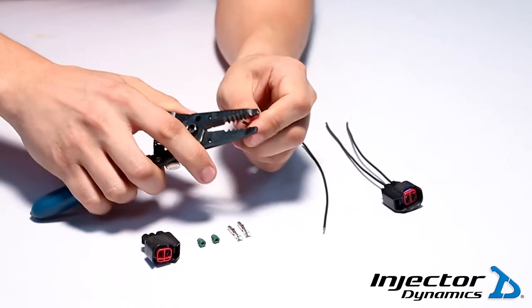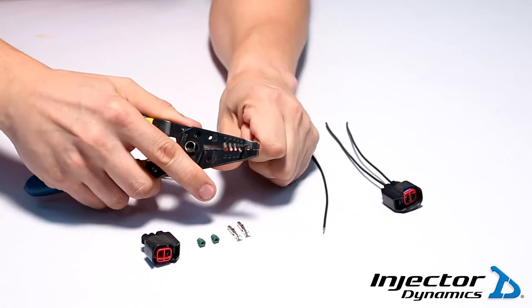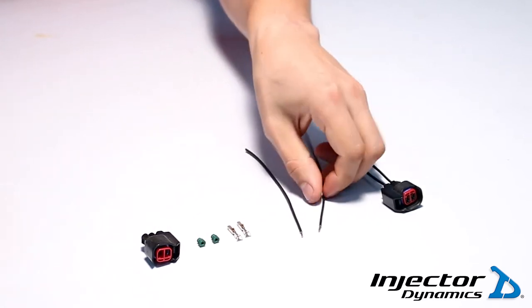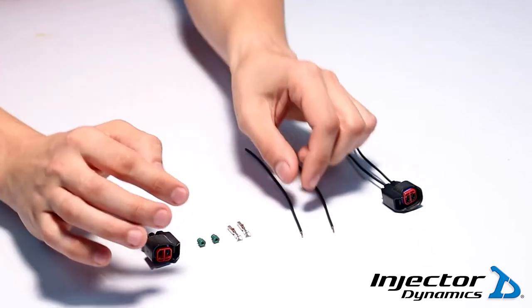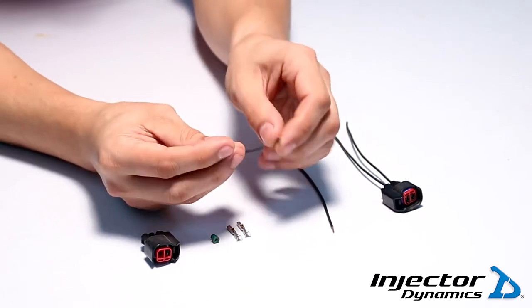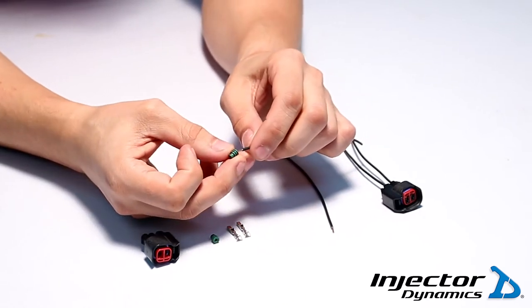Next, we're going to take both of the green seals and place them with the narrow end of the seal at the end of the wire.